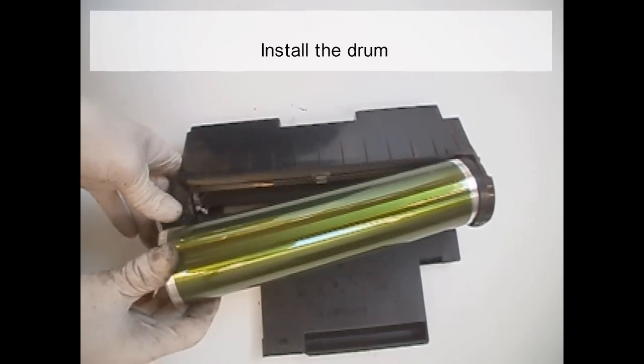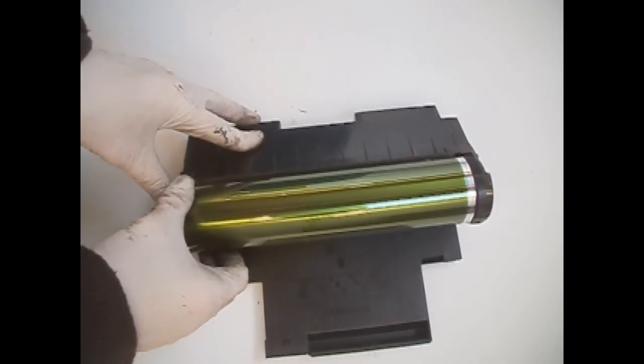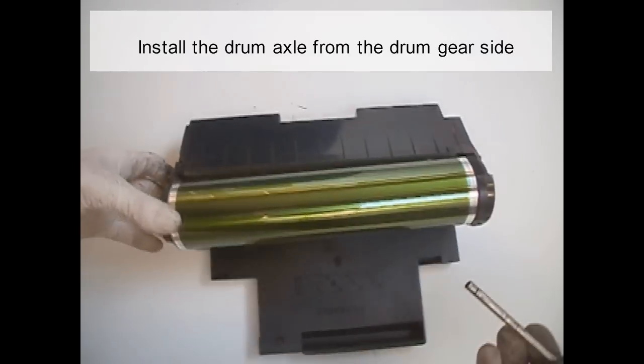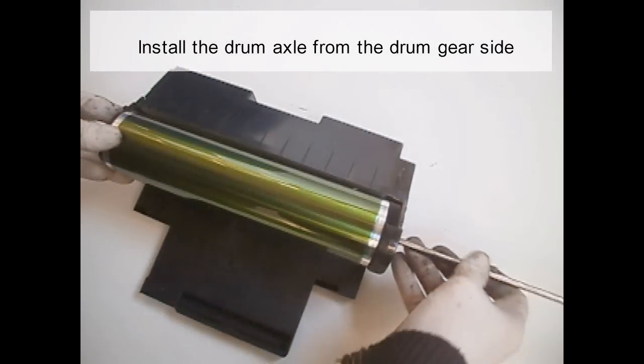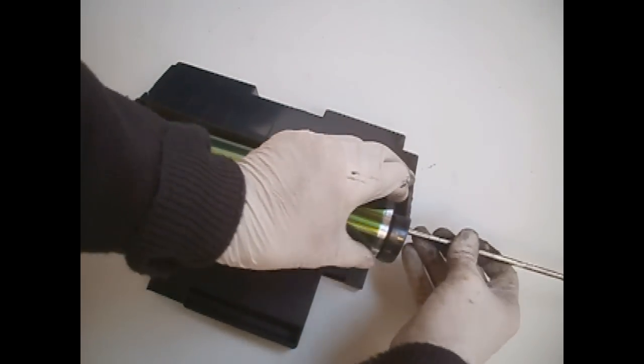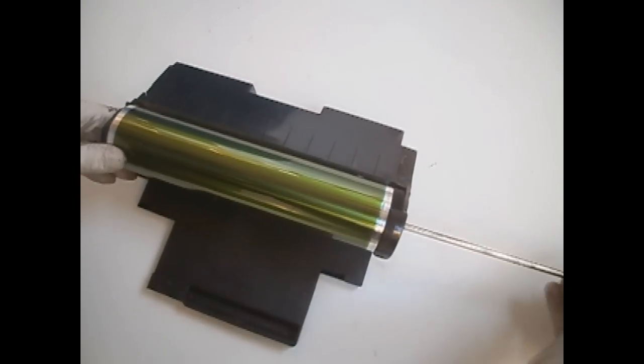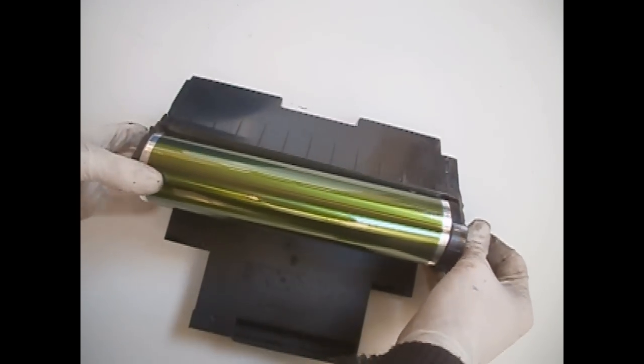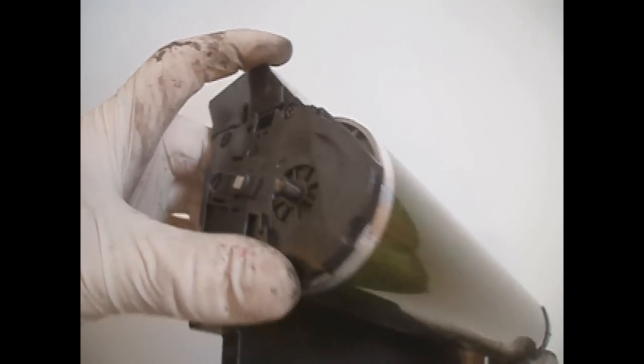Install the drum. Install the drum axle from the drum gear side. Install the drum axle.